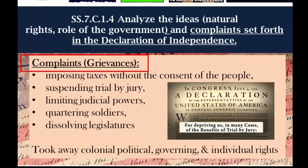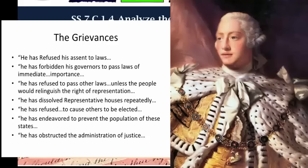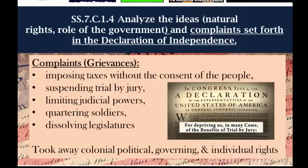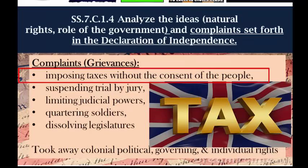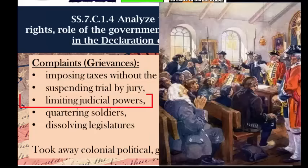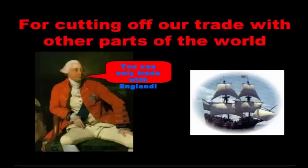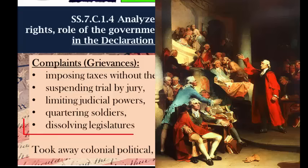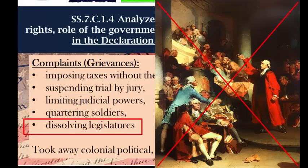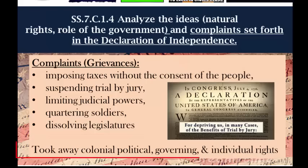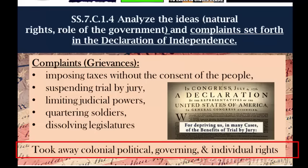The other section you need to know is the grievances section — the official complaints, the things the colonists were mad about and why they were declaring independence. One way to identify this section in an excerpt is that the complaints are addressed to the king: 'he did this, he did that.' The big ones to memorize: he taxed the colonists without their consent, he suspended trial by jury, he limited their judicial powers, he didn't let them trade with other countries, and he dissolved their legislatures. All of these complaints mean that the king and Great Britain took away the colonists' political and individual rights.